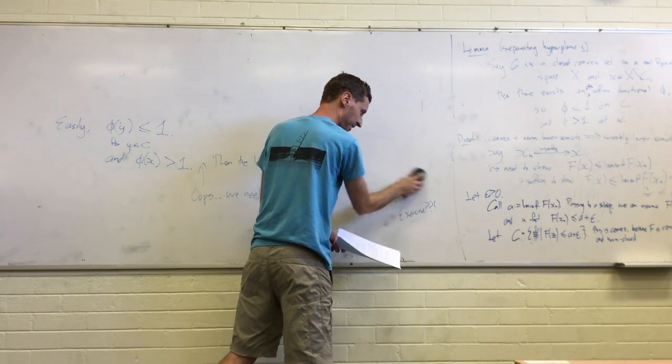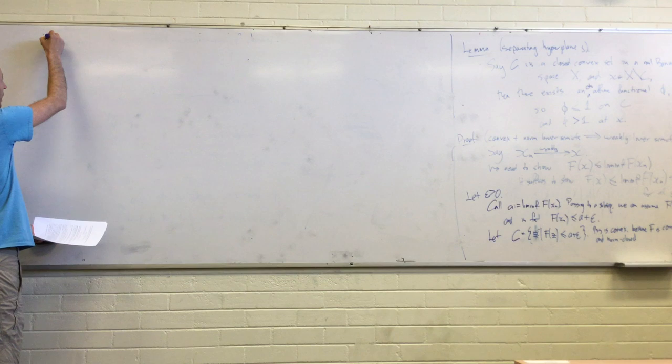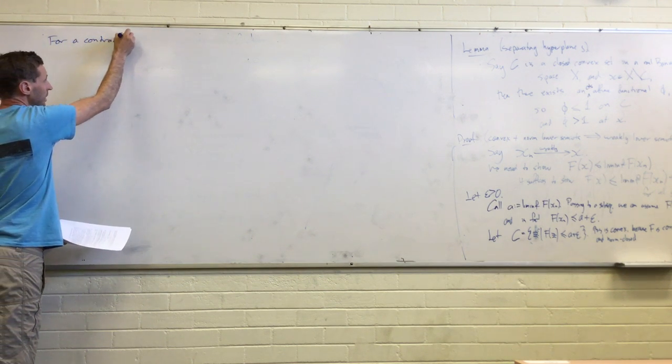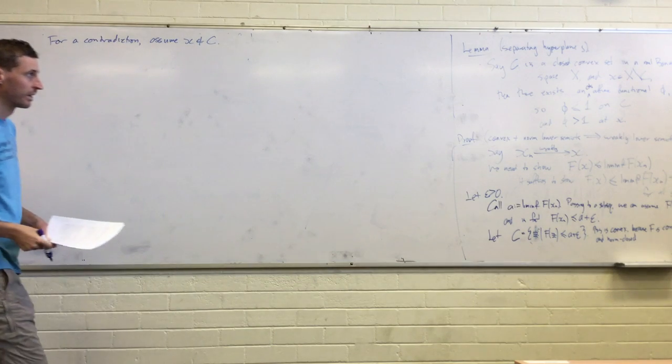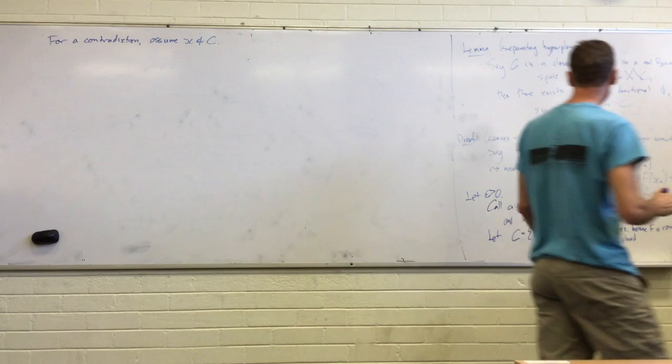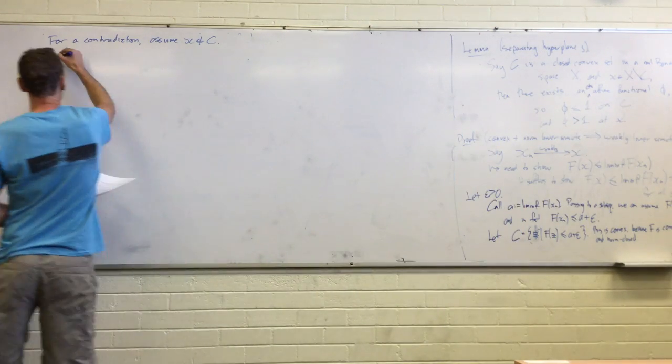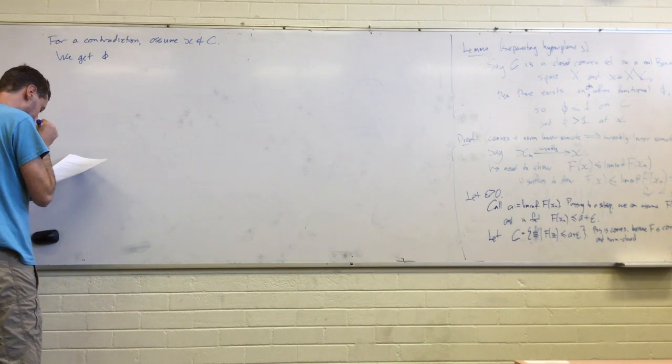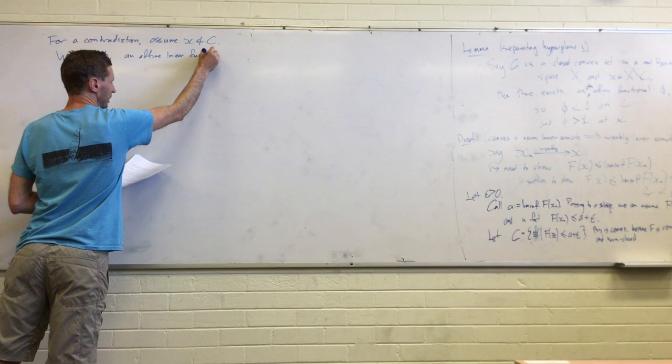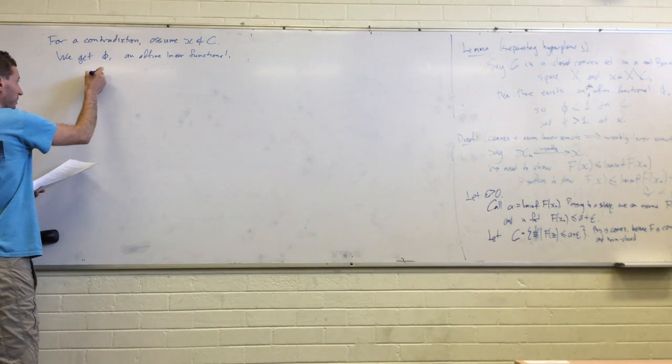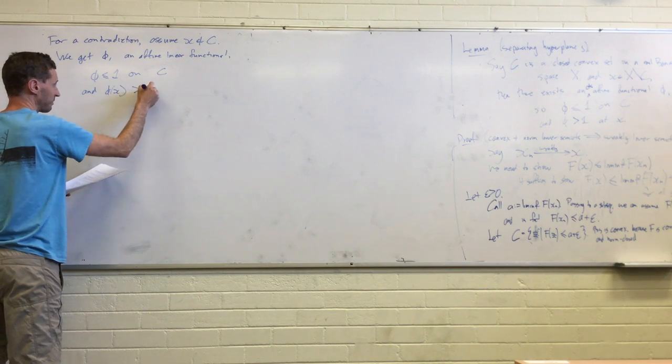And norm closed. By the hypothesis, that f is norm lower semi-continuous. So, we've now got two possibilities. Well, this limit point x is either in C or not in C. So, we're just going to use the separating hyperplane theorem to show that something goes wrong if it's not in C.